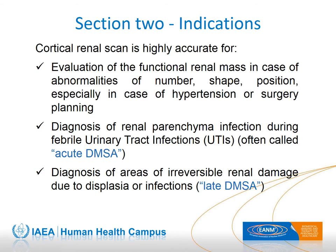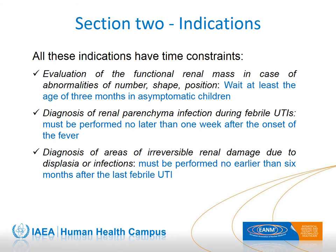Late DMSA is actually the clinical reference method for diagnosing renal scars. There is no hurry to ascertain abnormalities of number, shape, and position of the kidney in asymptomatic babies — the scan can safely be postponed until complete postnatal kidney maturation, after about the fourth month of age or later. Acute DMSA must be performed during the acute phase of infection, no later than seven days after the onset of fever — the earlier the better. Evaluation of the sequelae of infection requires at least six months between the last UTI episode and the scan, because defects have been reported after three to four months.